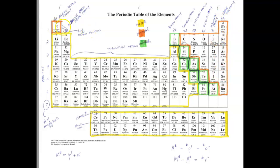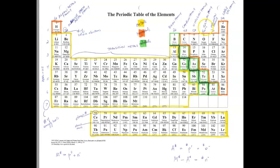So the first two and the last two groups have special family names. For groups 3A through 6A, the family name comes from the top element in that column: 3A is the boron family, 4A is the carbon family, 5A is the nitrogen family, and 6A is the oxygen family.